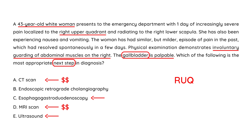CT and MRI are too expensive. An EGD — used to look down the esophagus and stomach — is not useful for the gallbladder. An ERCP might be done later to check for stones in the extrahepatic bile duct system, but it is not the initial step. The correct answer is ultrasound.